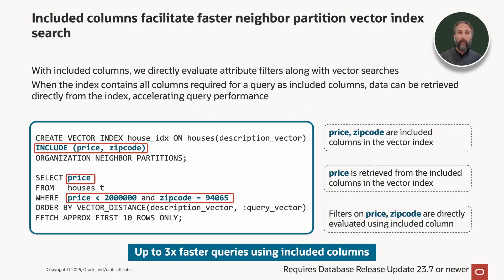New in Oracle Database 23.AI, release update 23.7 and newer, and Exadata System Software 25.2 is the ability to include columns in the vector index itself. With included columns, we directly evaluate attribute filters along with vector searches. When the index contains all the columns required for a query as included columns, data can be retrieved directly from the index, accelerating query performance. If we recreate the vector index from the previous example and include price and zip code as indicated in the syntax on the left-hand side, we can rerun that same query, and price is retrieved from the included columns in the vector index, with filtering on price and zip code done directly against that index using AI smart scan. This results in up to three times faster queries using included columns.